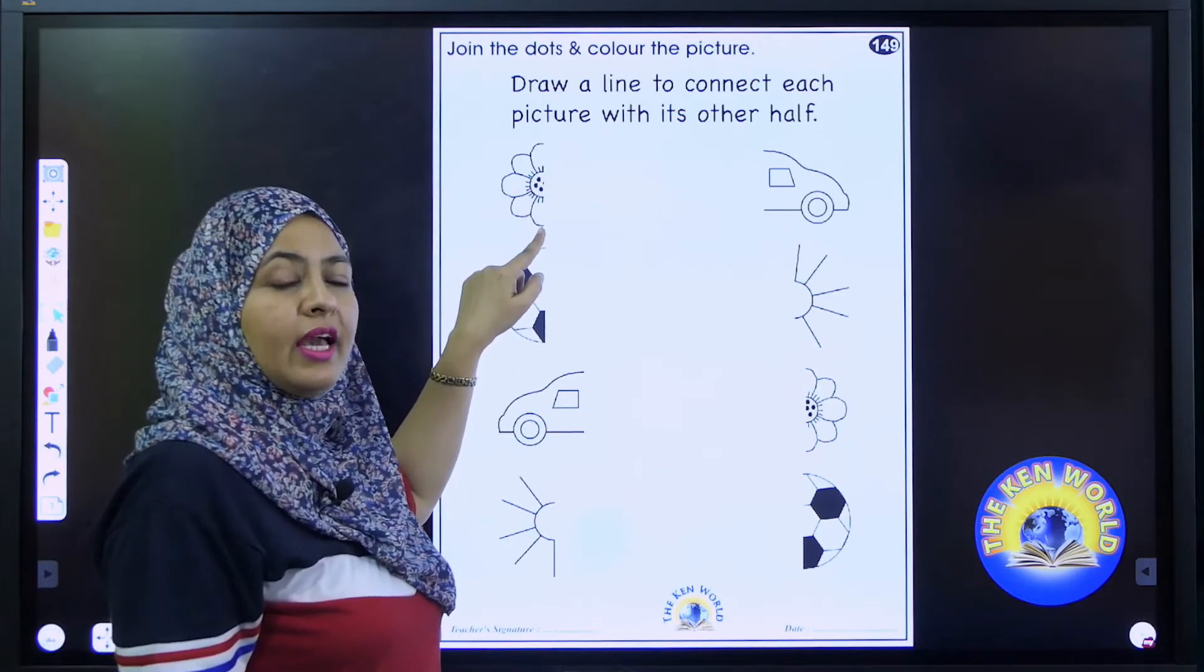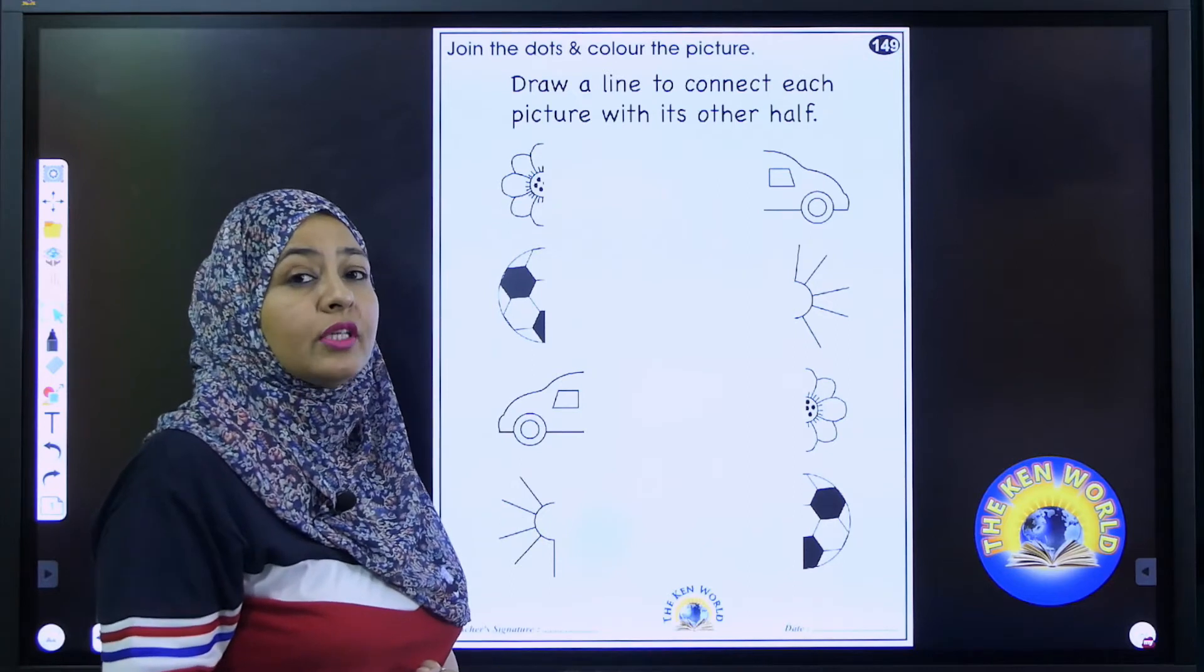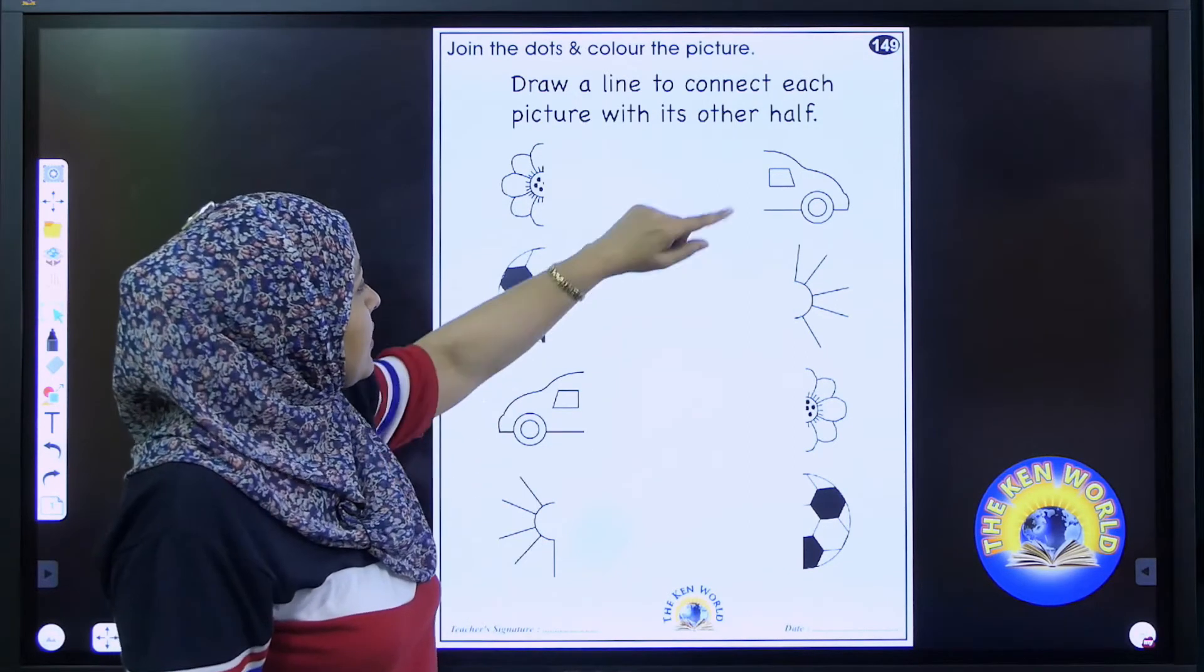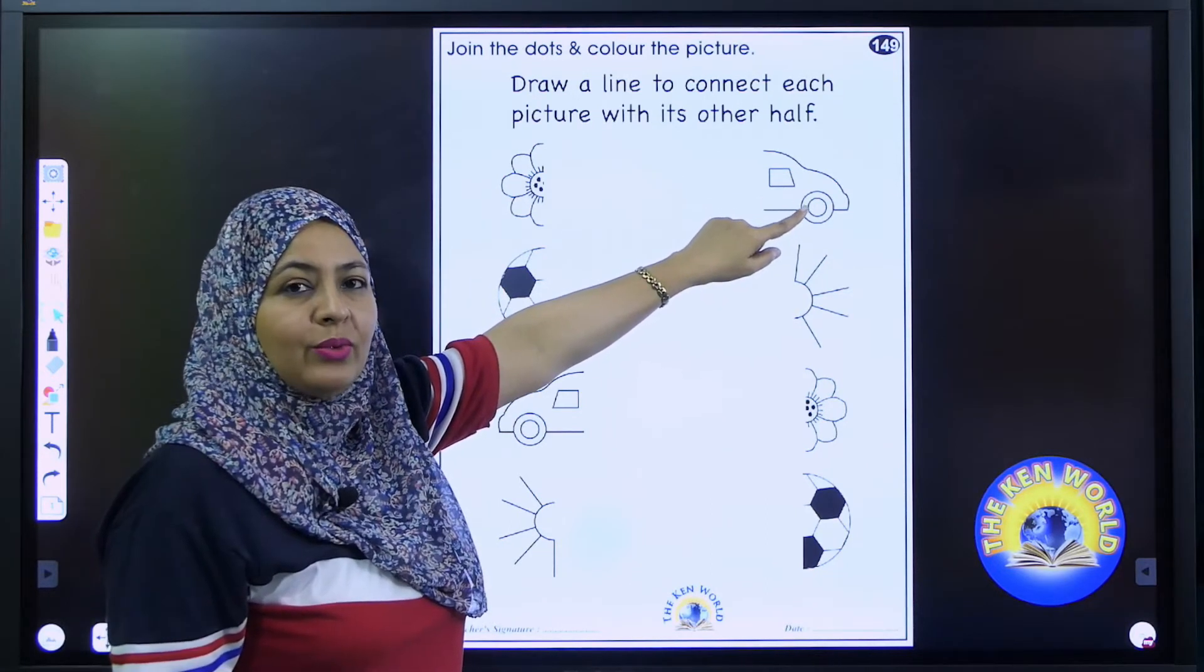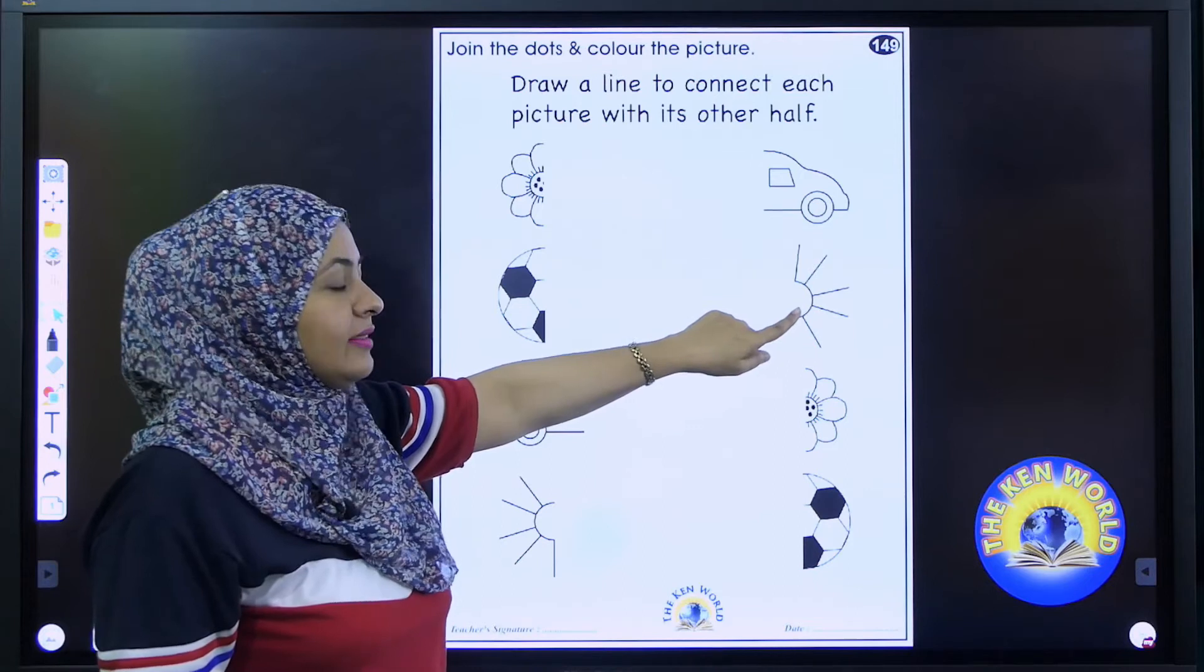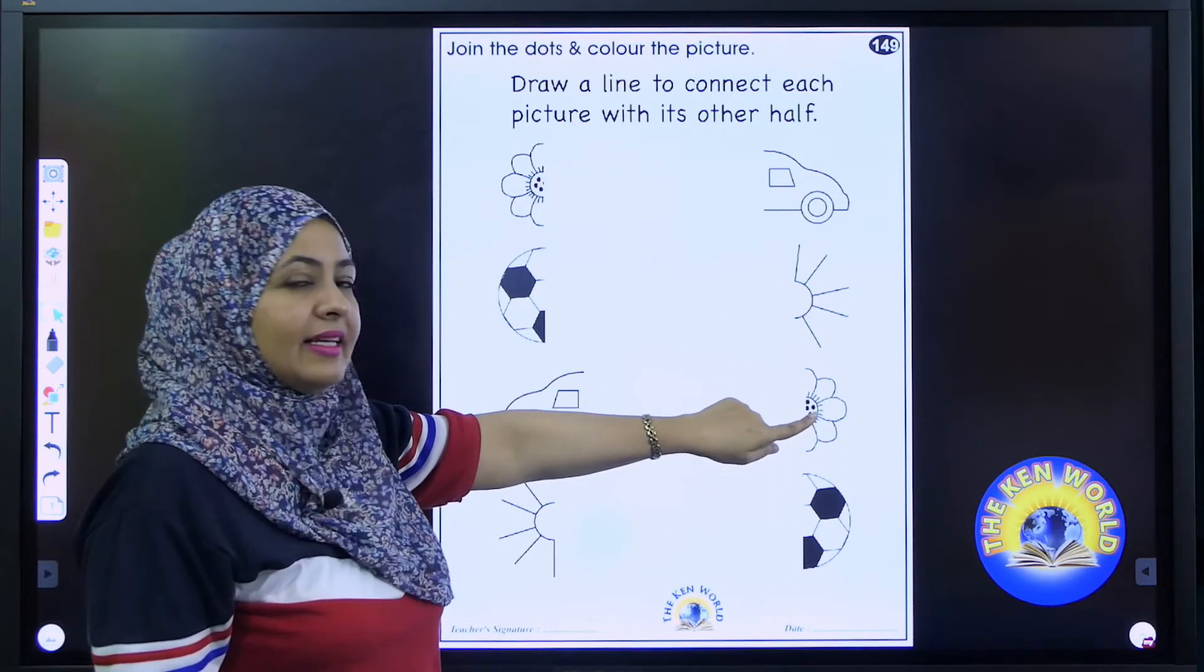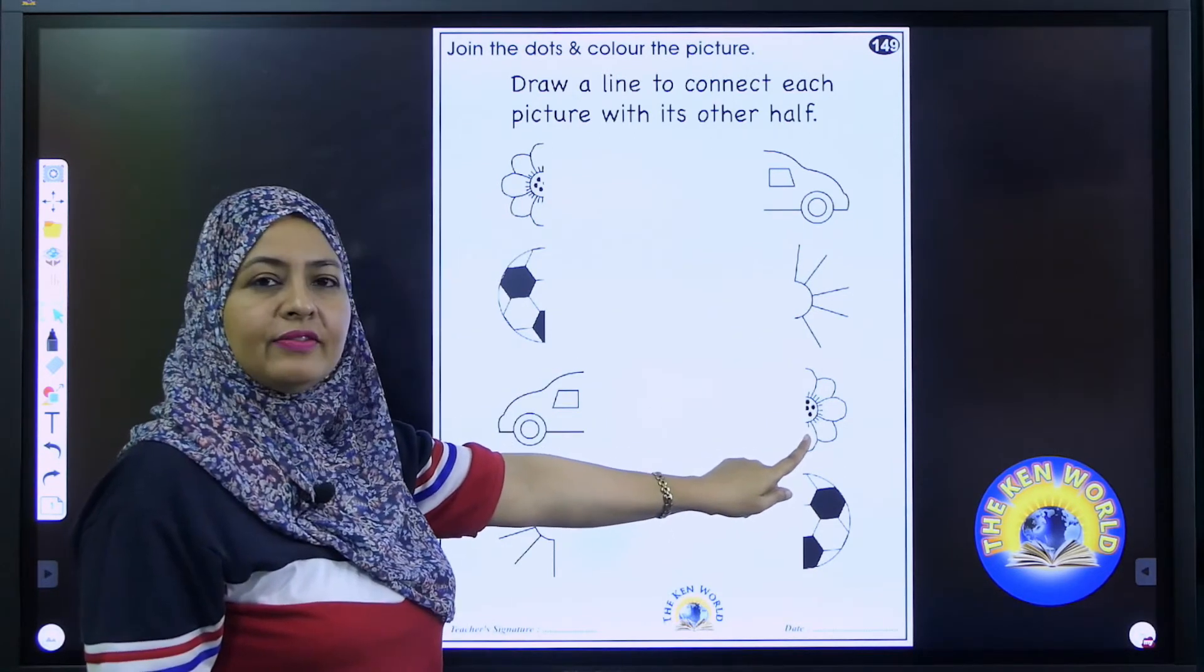Yes, it is a picture of a flower. So we have to connect its other half and you have to search out. So find out where its other half. Is this one? No. Is this one? No. Is this one? No. Is this one? Yes. So connect this half with its other half.